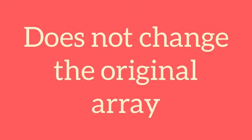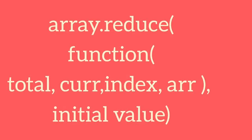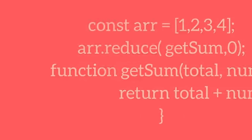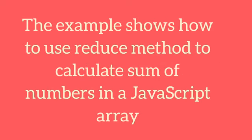The first argument is a callback function which takes four arguments. The second argument is the initial value of the accumulated result. For example, the reduce method can be used to get the sum of numbers in an array.